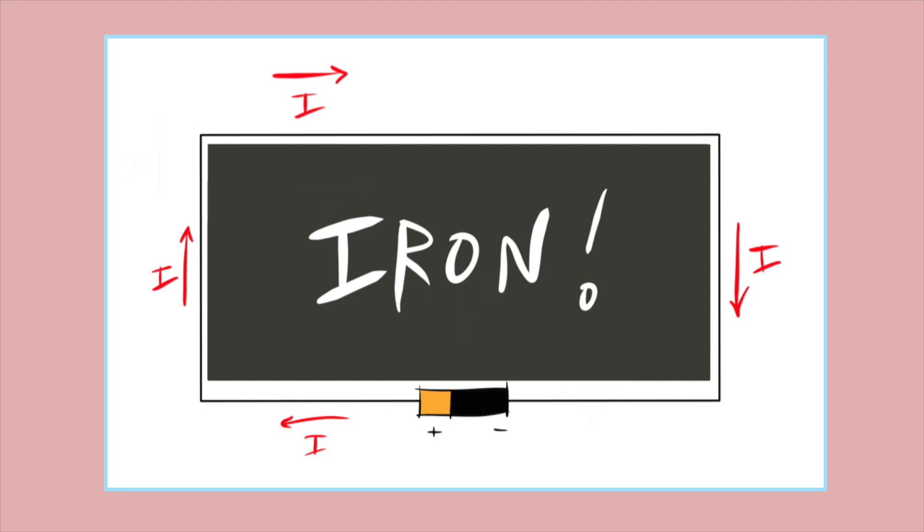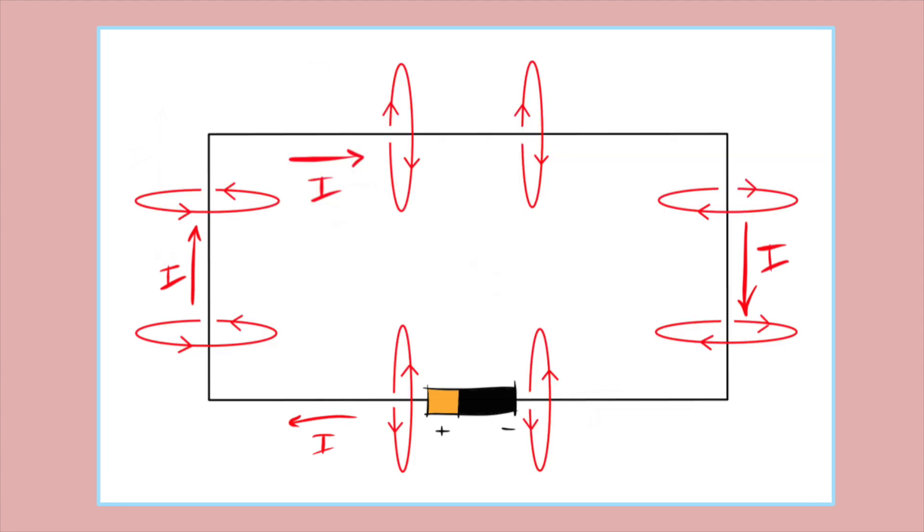But let's move on to the direction of the field. Well, remember that the field circles around the wire. The direction of the loops are not random though, and actually point in specific directions. So what are these directions? We need a method for figuring it out.